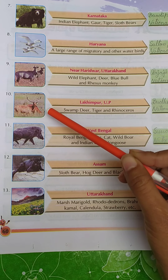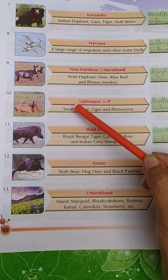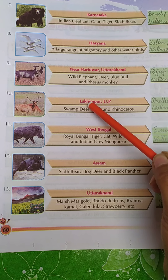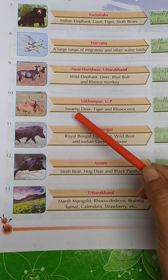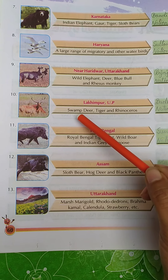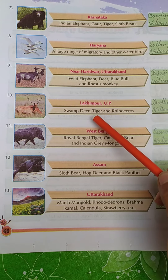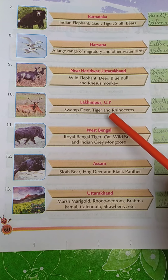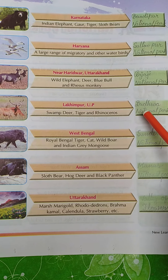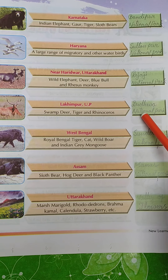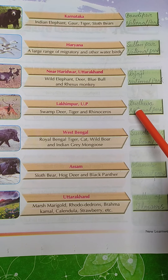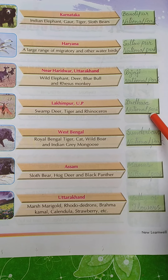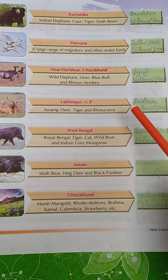Number ten. Lakhimpur, Uttarakhand. The animals are swamp deer, tiger, and rhinoceros. The name of this national park is Dudhwa National Park.